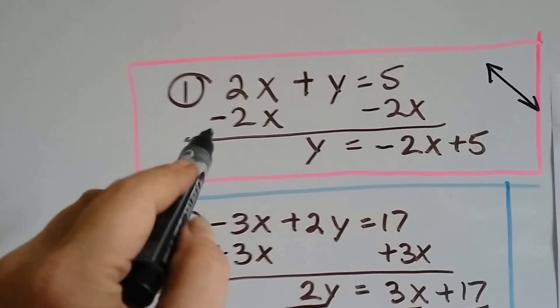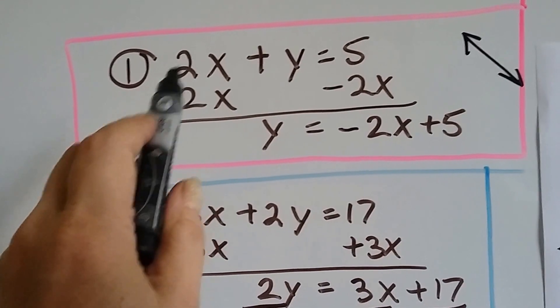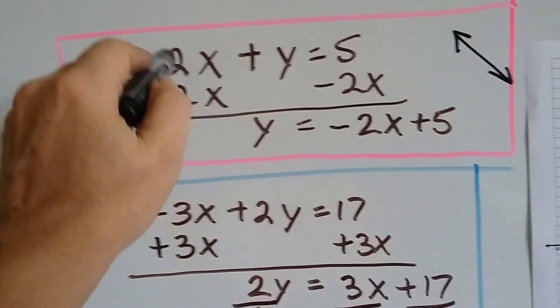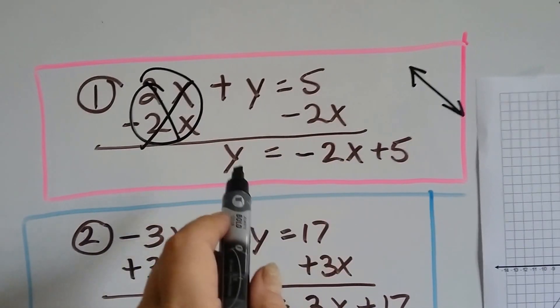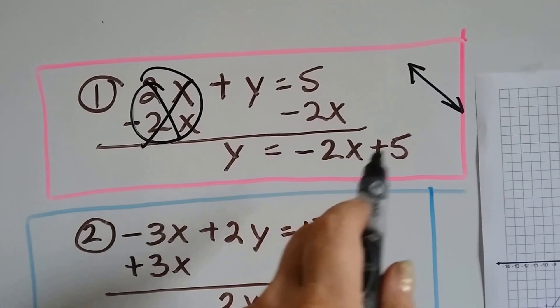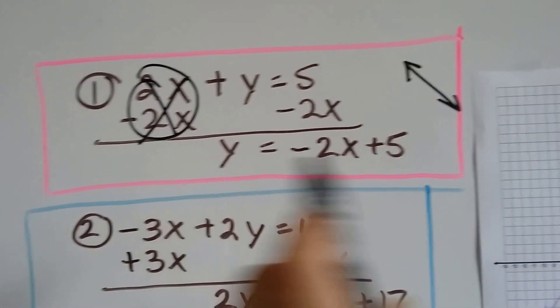So our first equation needs to be in slope-intercept form. So I'm going to take this 2x away from this side. That eliminates it. I'm going to put it on this side, and I get y equals negative 2x plus 5. So now that's in slope-intercept form.